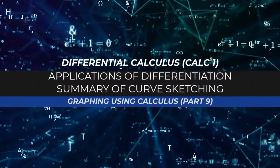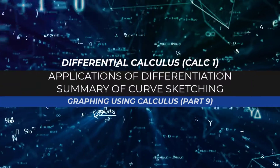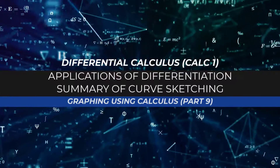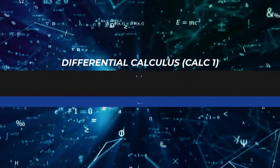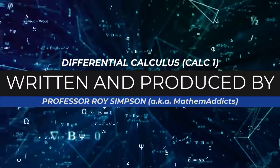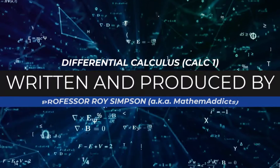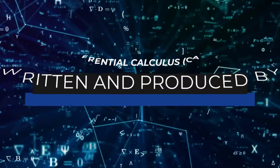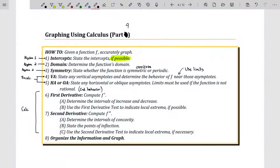It's the system of equations. We must deal with them all at once. Always looking for solutions. Positive outlook over the course. Hello, my name is Roy Simpson, Professor of Mathematics at Cosumnes River College in Sacramento, California. This video is a continuation of graphing using calculus — yet another example.